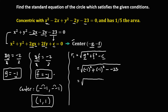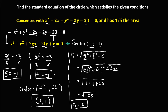Simplifying: negative 1 squared is positive 1, plus negative 1 squared is also positive 1, then minus negative 23, which is a double negative giving positive 23. So we have the square root of 1 plus 1 plus 23, which equals the square root of 25. Therefore r sub 1, the radius of the given equation, is positive 5.